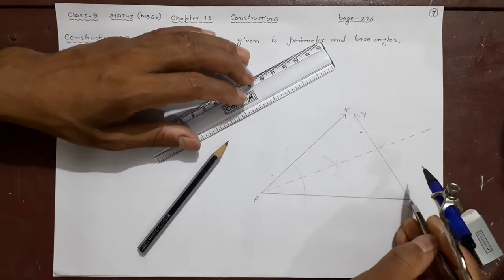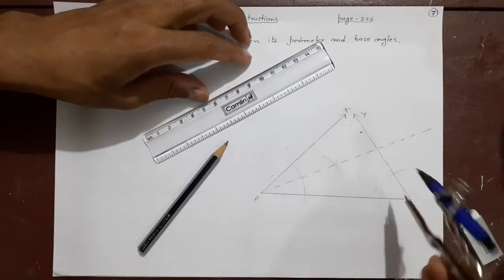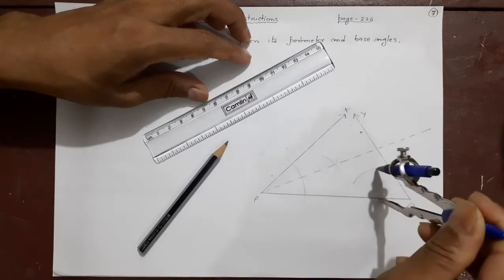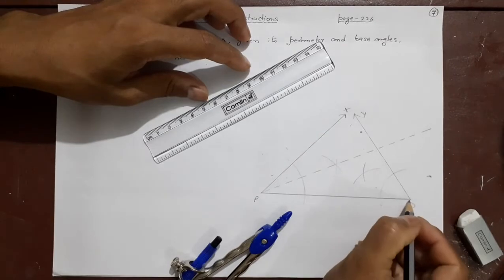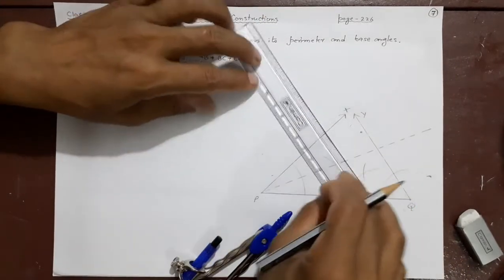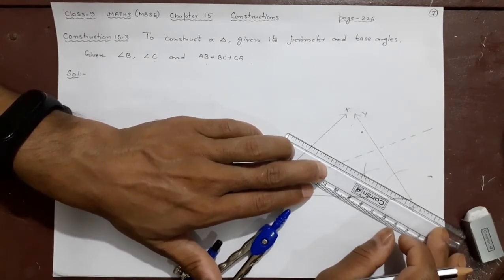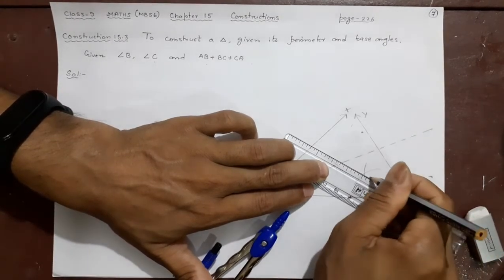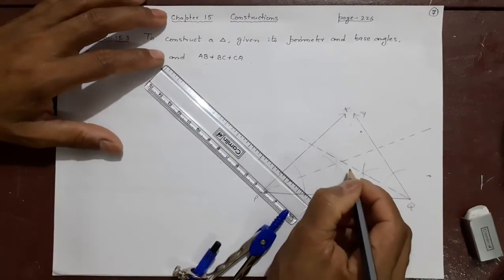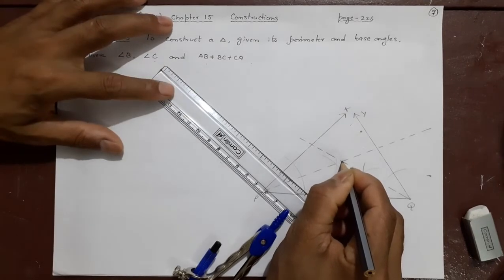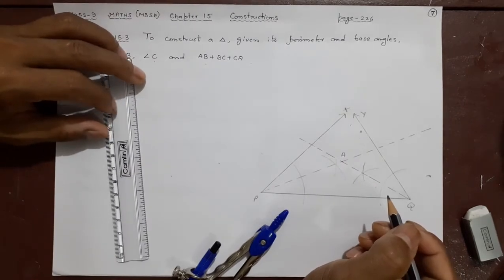And after that, here this side also will do the same thing. We will bisect this angle. How we will bisect. Put your compass here. You can choose whatever arc you want. It has to only cut these two sides. After that you put it here. You can change or retain the same. This is the process of bisecting an angle. So where you will join this to here. Let us join that. Now where they are canceling each other, when they are cutting each other, that will be called your A.